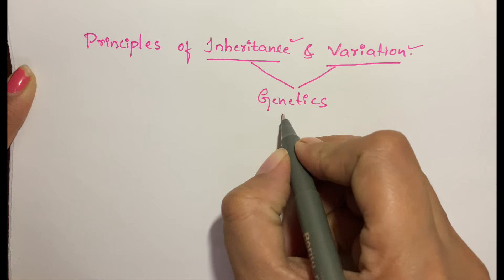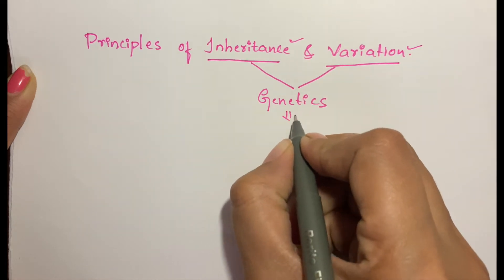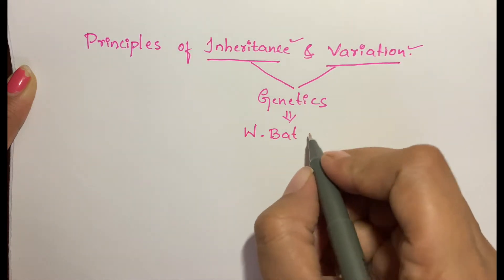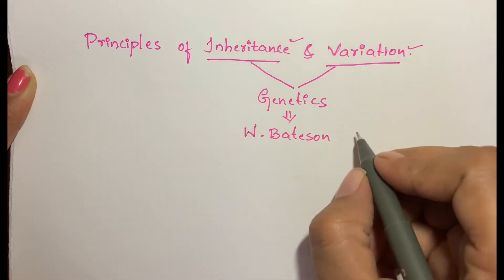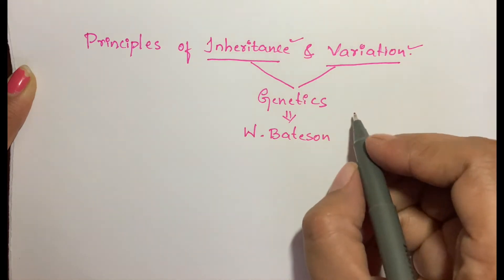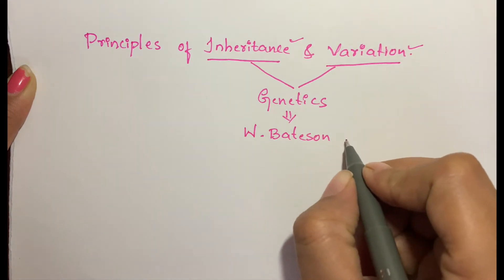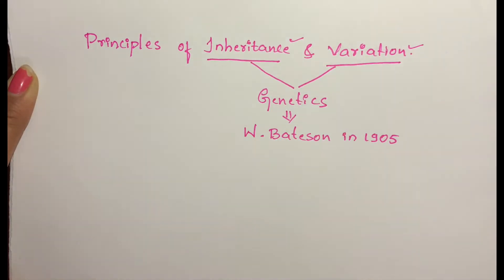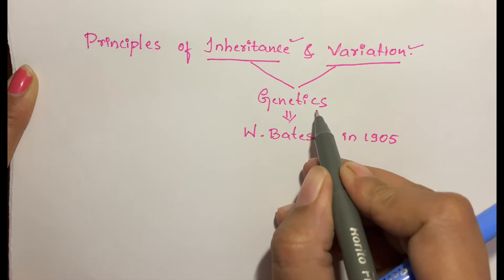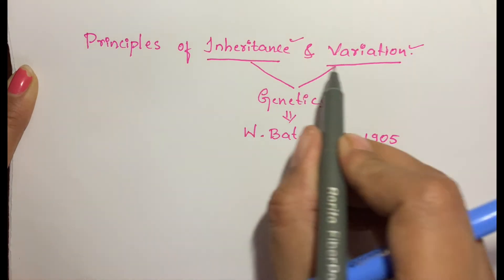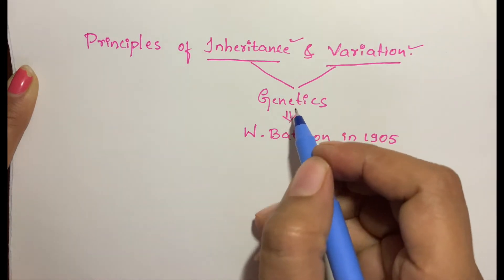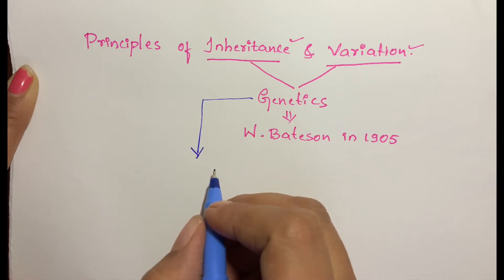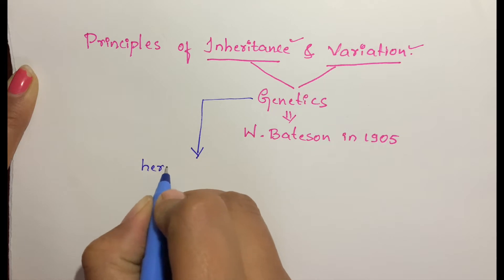The term 'genetics' was coined by W. Bateson — these names are very important. Genetics was used by W. Bateson for the first time in the year 1905. We define genetics as the science which deals with inheritance and variation, or in other terms, the science which deals with heredity and variation.